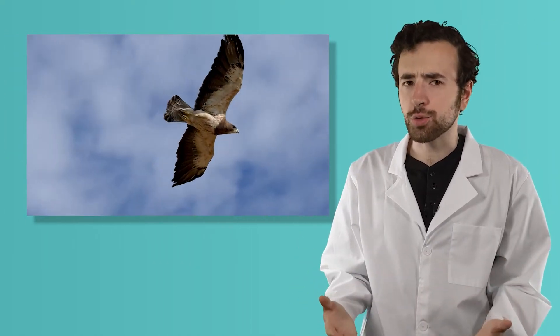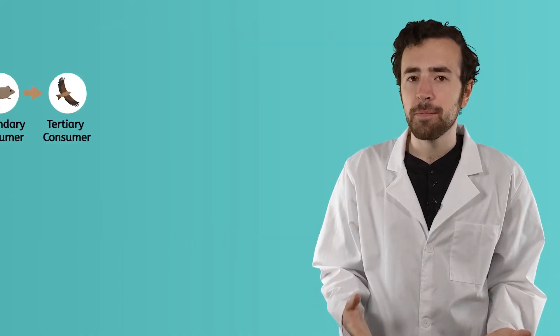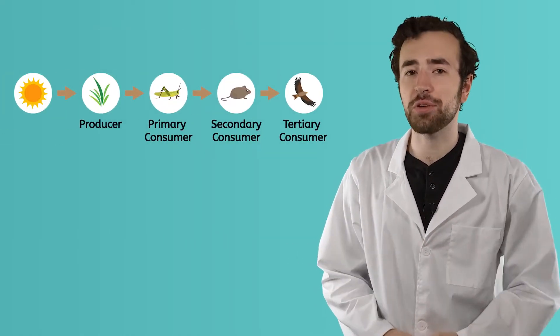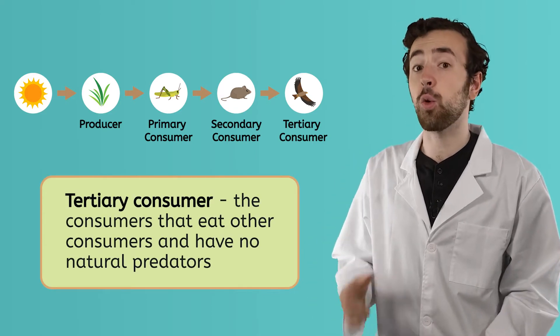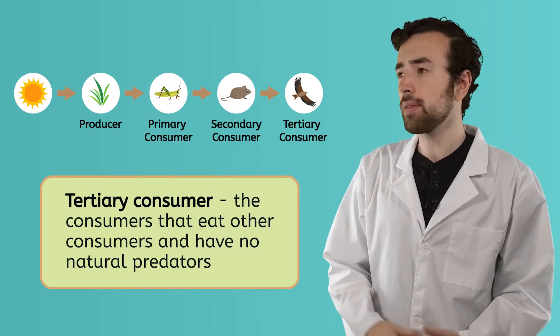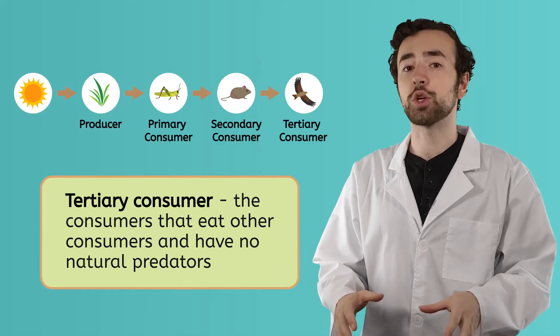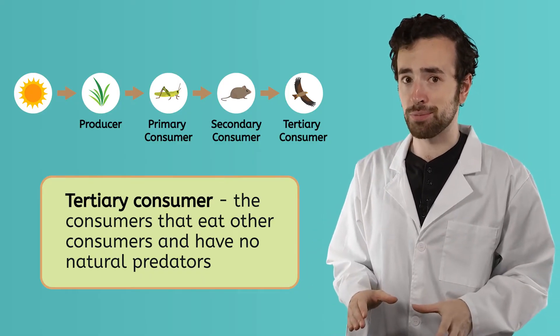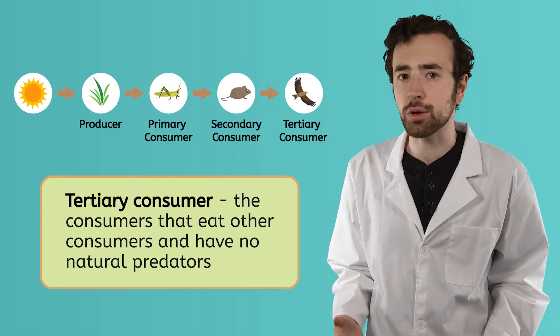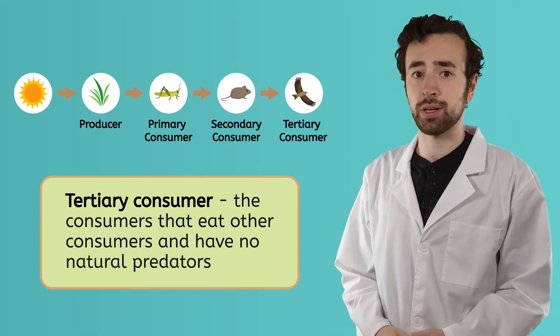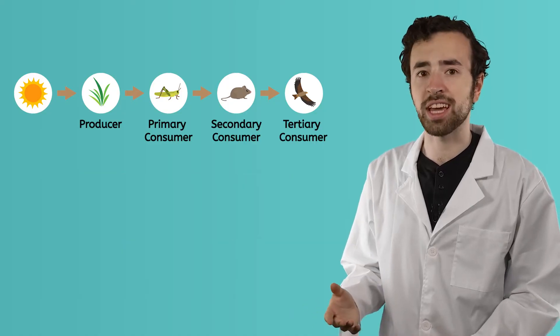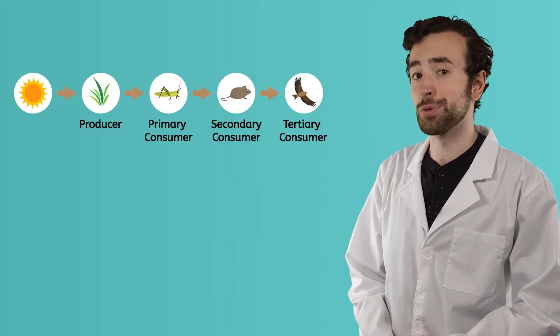What if a hawk swoops by and eats the mouse? The hawk is a tertiary consumer, which describes the animals that can eat secondary or primary consumers. Unlike those consumers, tertiary consumers have no natural predators of their own. That means that within their ecosystems, no one gets their energy by eating tertiary consumers. The hawk, in this case, is at the top of the food chain.